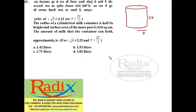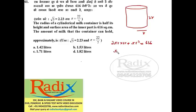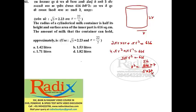The surface area of the inner part (open top) is 2πrh plus the base = 2πr·(2r) + πr² = 4πr² + πr² = 5πr² = 616. So r² = 616/(5π) = 616×7/(5×22) = 4312/110 = 196/5. Thus r = 14/√5.